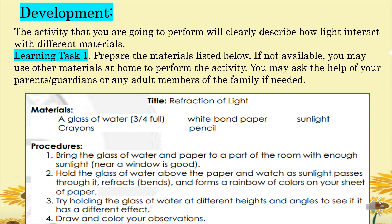The title of the activity is Refraction of Light. Materials needed: a glass of water, crayons, white bond paper, pencil, and sunlight. Procedures: First, bring the glass of water and paper to a part of the room with enough sunlight — near a window is good. Second, hold the glass of water above the paper and watch as sunlight passes through it, refracts or bends, and forms a rainbow of colors on your sheet of paper. Third, try holding the glass at different heights and angles to see if it has a different effect. Finally, draw and color your observations.